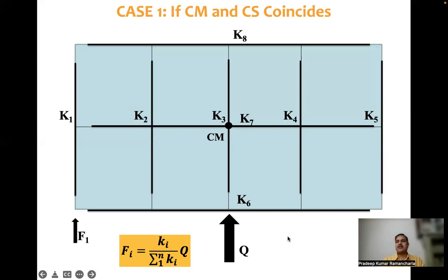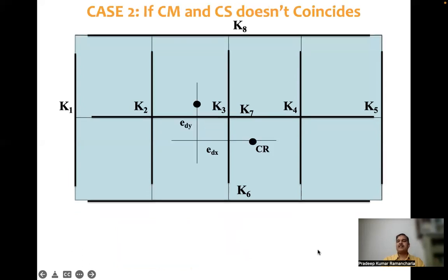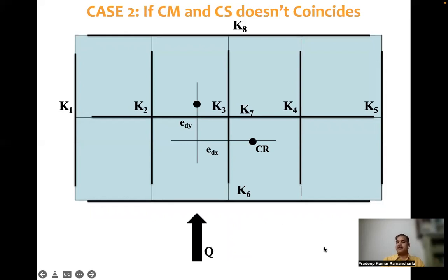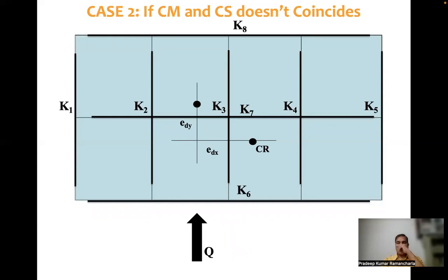Case two: if the center of resistance and center of mass are not coinciding, there is some eccentricity — a design eccentricity. The story level force q acts at a design eccentricity distance from the center of resistance. This needs to be done in two directions, but explaining here for one direction: how forces on each frame and additional forces due to design eccentricity are computed.